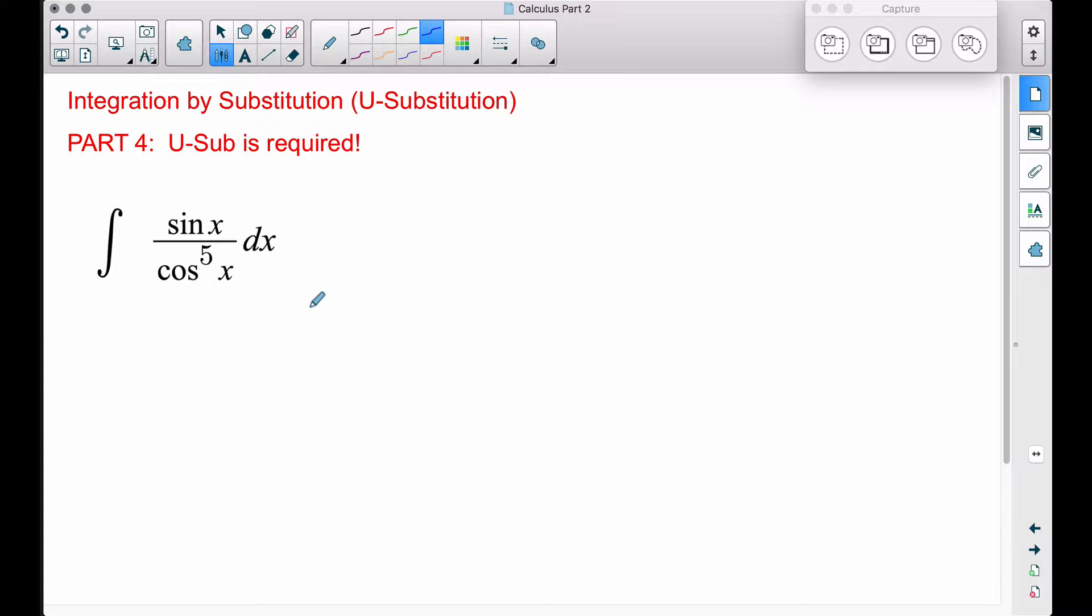Now, it does matter which one you pick in this particular example. I went ahead and rewrote this. The cosine X all to the fifth, that right there can fool people a little bit, but it's the same thing as this right here, cosine of X all to the fifth power.